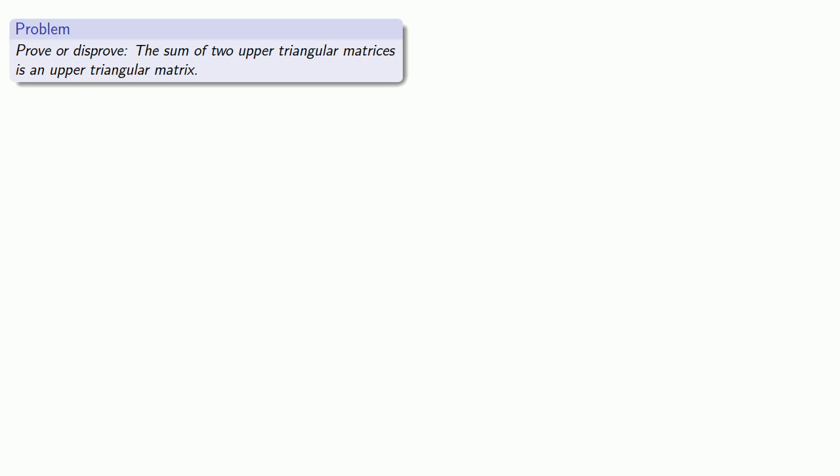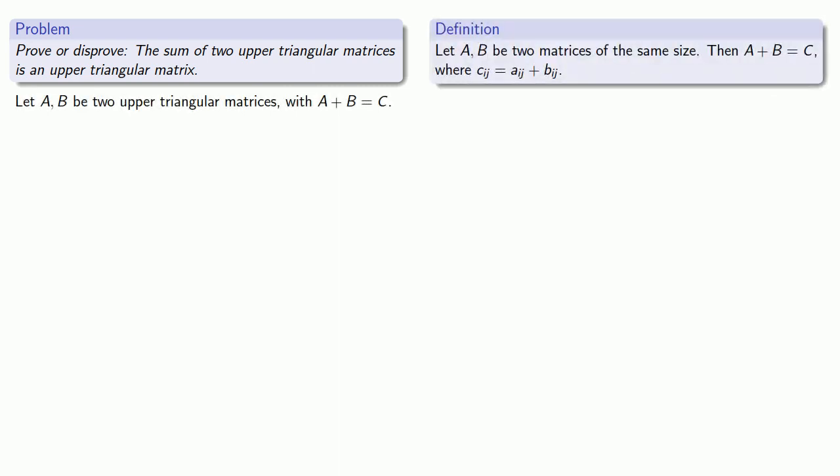So we want to talk about triangular matrices and the sum of two matrices. So let's see what happens if I have two upper triangular matrices where their sum is equal to something. From the definition of the sum of two matrices, we see that this sum matrix C will have entries Aij plus Bij.